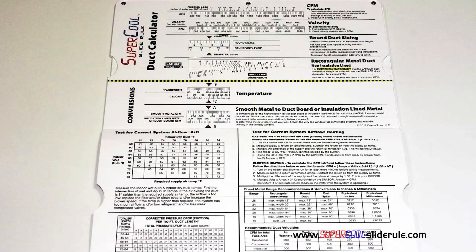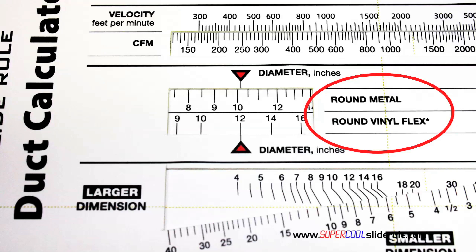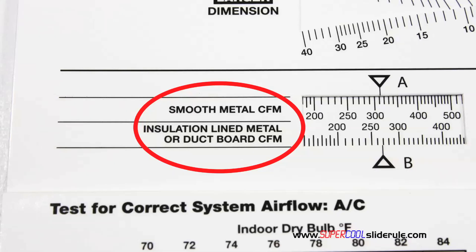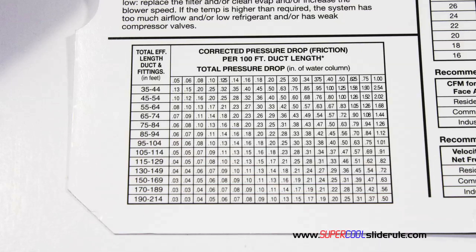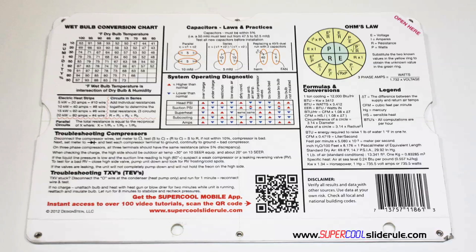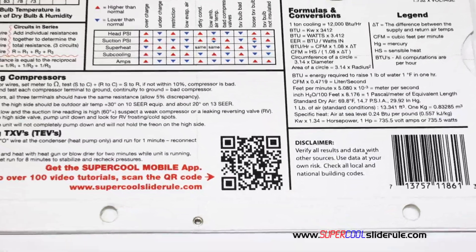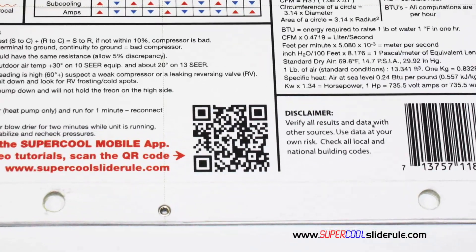And how to troubleshoot compressors and TXV. Inside is packed with even more information. It performs sizing of both metal and flexible duct. It has the only direct reading conversion from smooth metal to insulation-lined metal we've ever seen. The majority of technicians have never been taught that if the insulation is on the inside of the ductwork, you cannot size it with a regular duct calculator. It has step-by-step directions for determining airflow through a gas furnace, electric furnace, or an air conditioning unit. It has pressure drop multipliers for ductwork, as well as recommended velocities. And finally, the scanning of this QR code gives instant access to over 100 tutorials to assist the technician with every test and repair imaginable.